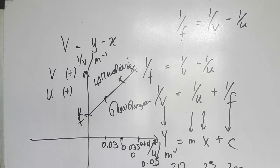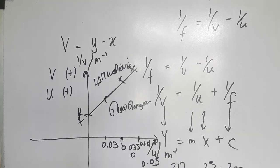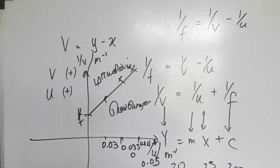It is 0.05. So we will write the u by 0.03. If you like this video, please like this channel and share with my friends. Thank you.